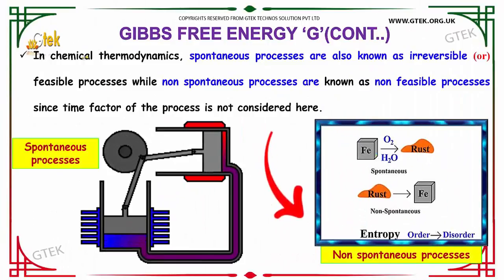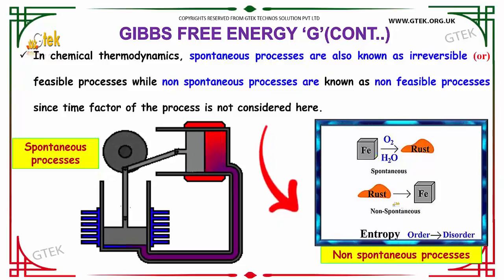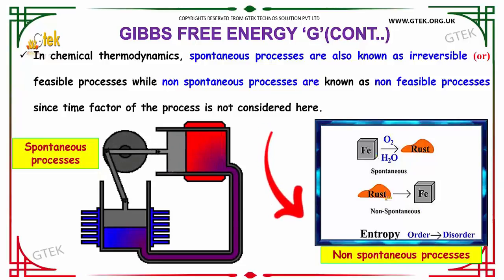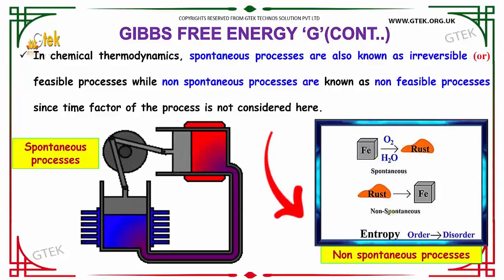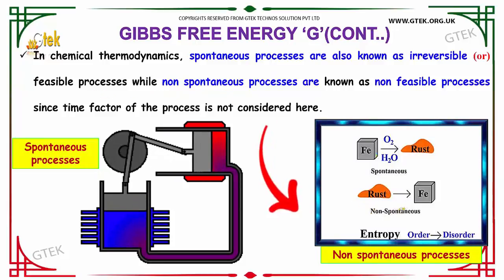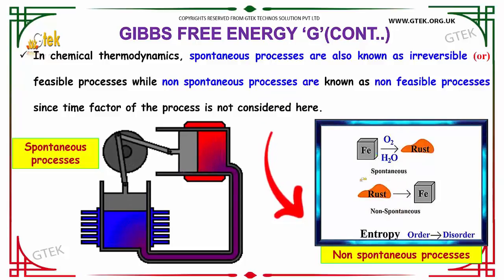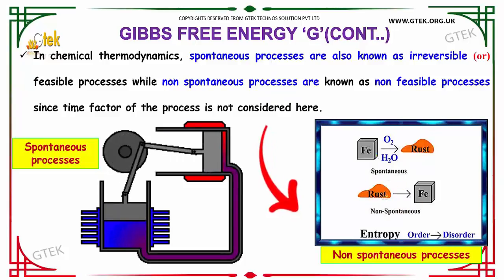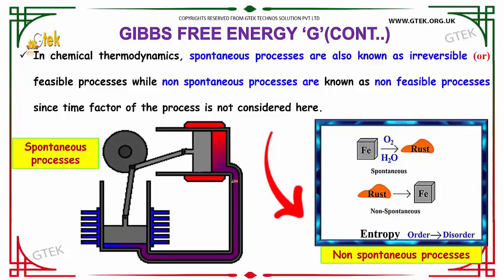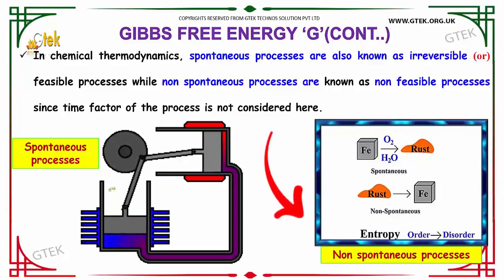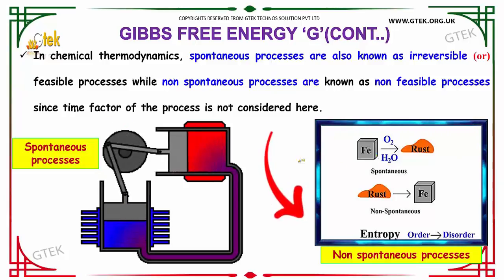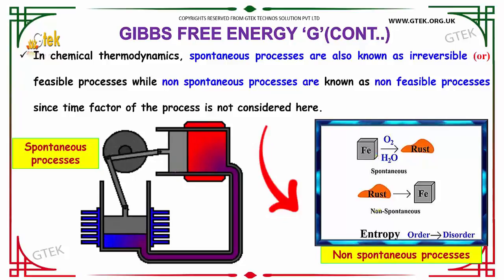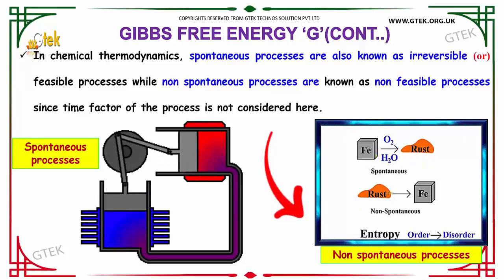In chemical thermodynamics, spontaneous processes are also known as irreversible processes, or feasible processes. Non-spontaneous processes are known as non-feasible processes. Since the time factor of the process is not considered here — for example, iron can become rust, but rust cannot become iron.